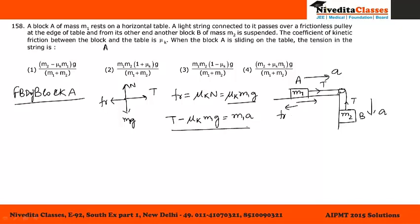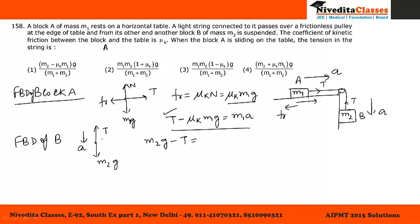Now for the FBD of block B: two forces act — M2g downward and tension T upward. Since block B moves downward with acceleration A, M2g is greater than T. So: M2g minus T equals M2 times A. This is equation 2. We want to calculate the value of T by eliminating A from these two equations.